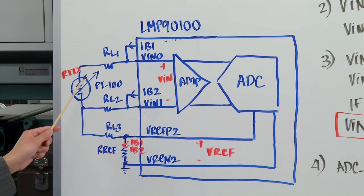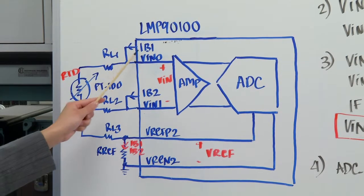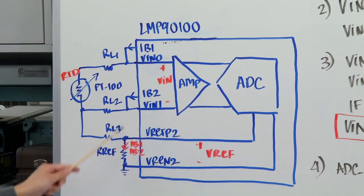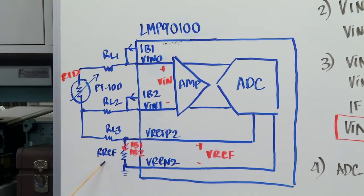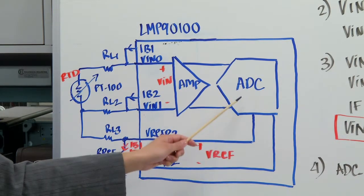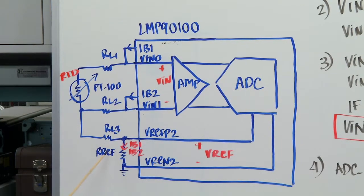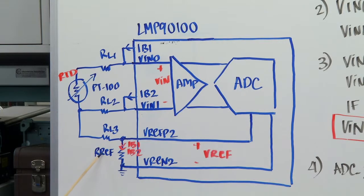And the RTD will be connected in a ratio metric configuration where the bias current will also be sourcing this external resistor for your reference. And this reference RF will be sourcing the VREF for your ADC. So let's see how this ratio metric configuration can reduce your sensor signal path error.